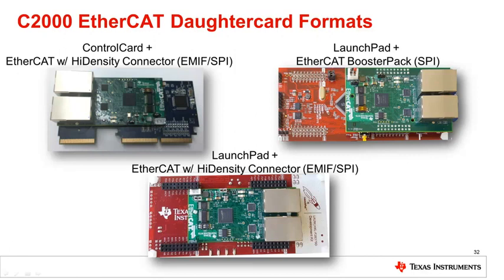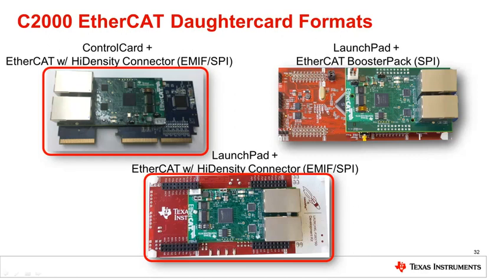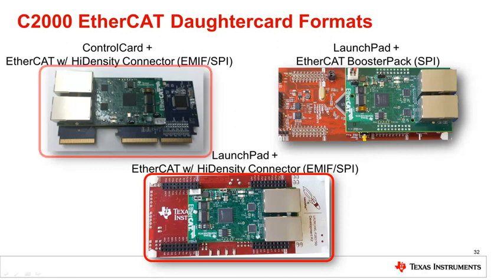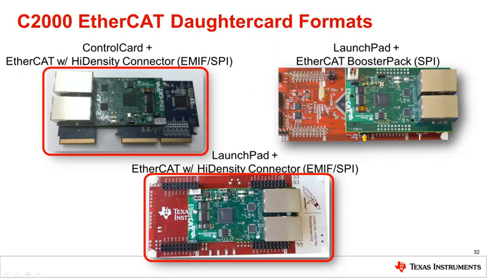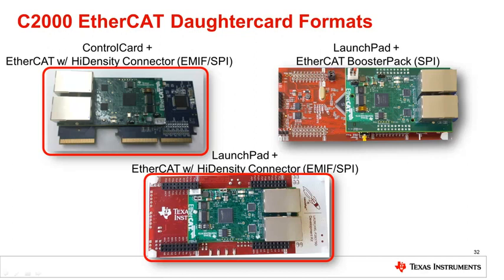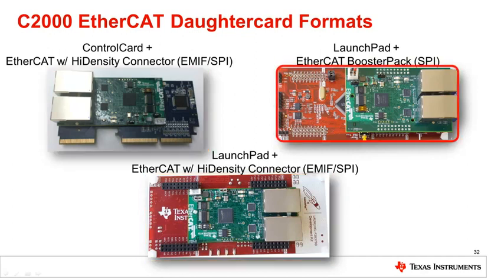The C2000 EtherCAT daughter card has two physical forms. The first is a control card format with a high-density connector that can support a 16-bit asynchronous parallel EMIF interface or a standard SPI serial interface. This daughter card can be connected to an F28377 Delfino control card or an F28377D Delfino dual-core launchpad. The second form is a booster pack format, which can connect to any TI launchpad through a SPI interface only.